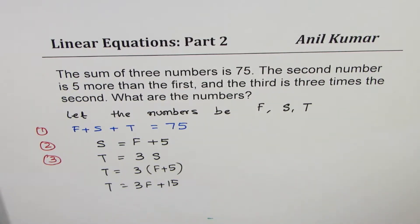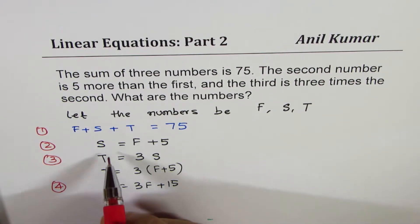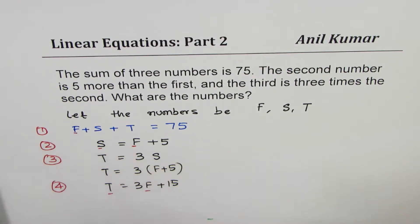So we can form one equation in terms of F. Let's rewrite our equation. We had F + S + T = 75.